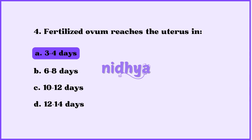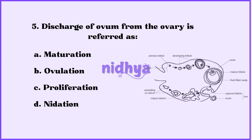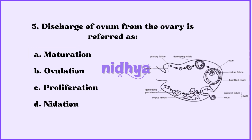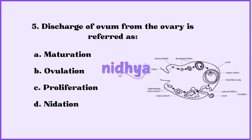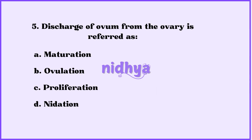Fifth question: Discharge of ovum from the ovary is referred to as — menstruation, ovulation, proliferation, or nidation? The answer is ovulation.